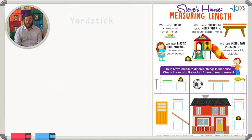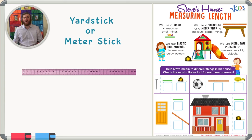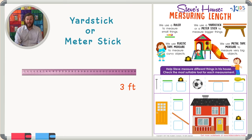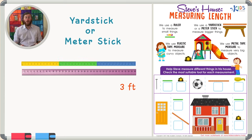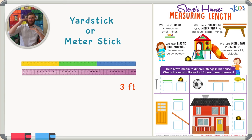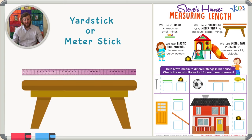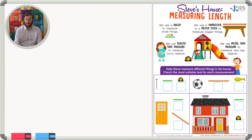The next tool I'd like to talk to you about is a yardstick or a meter stick. A yardstick is exactly three feet long because there are three feet in one yard. A meter stick is about three feet long, so we can use a meter stick and a yardstick kind of in the same way. We use them to measure bigger things — it's like having three rulers on top of each other — such as a table.